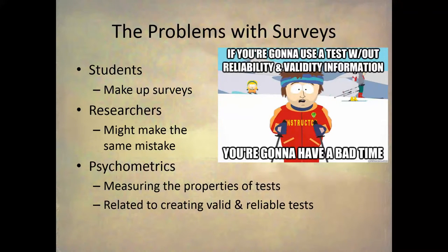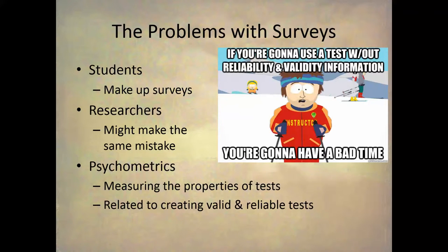This is an important warning, because students often make up surveys. They're interested in, say, people's feelings about body image, so they just sit down and come up with questions they think would measure that. This doesn't work — I've supervised too many student research studies where they do that and it doesn't work. When you do that, you're not following normal procedures of test construction and you have no validity or reliability information, so you're going to have a bad time. Researchers might make the same mistakes, so it's important to understand psychometric properties, reliability, validity, and test construction.